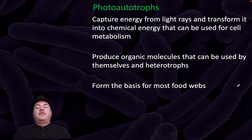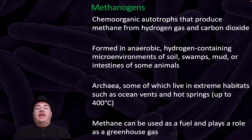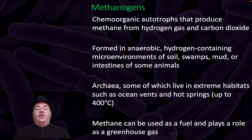Photoautotrophs capture energy from light rays and transform it into chemical energy for cell metabolism. They produce organic molecules that can be used by themselves and by heterotrophs, and they form the basis of most food webs. Chemoautotrophs can be broken down into chemoorganic autotrophs and chemolithoautotrophs. Chemoorganic autotrophs use organic compounds for energy and inorganic compounds as a carbon source, whereas chemolithoautotrophs require neither sunlight nor organic nutrients and rely entirely on inorganic materials. Methanogens are chemoorganic autotrophs that produce methane from hydrogen gas and carbon dioxide, found in anaerobic environments like soil, swamps, mud, or the intestines of some animals. They are archaea, some living in extreme habitats such as ocean vents and hot springs reaching up to 400°C, and methane can be used as a fuel and acts as a greenhouse gas.